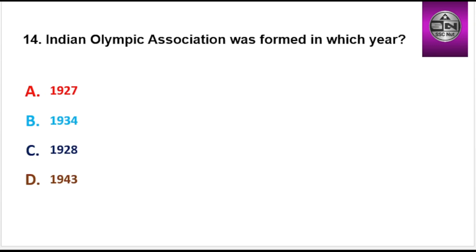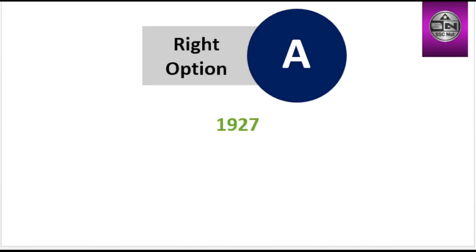Next question: Indian Olympic Association was formed in which year? Options are 1927, 1934, 1928, 1943. Right option is A: 1927.